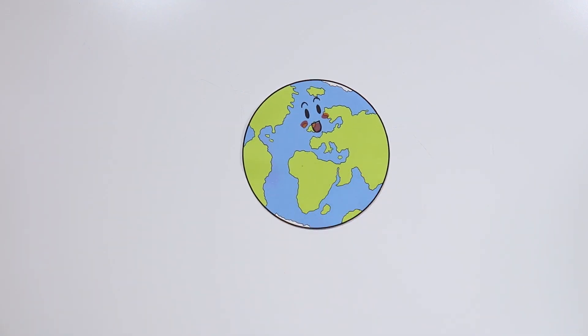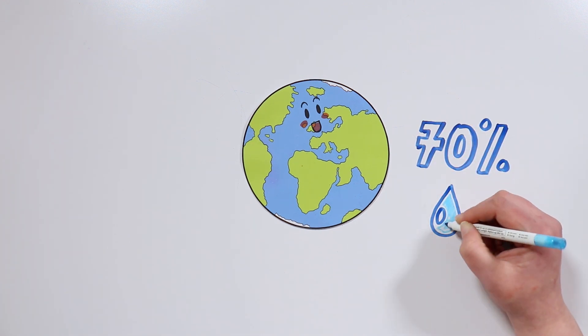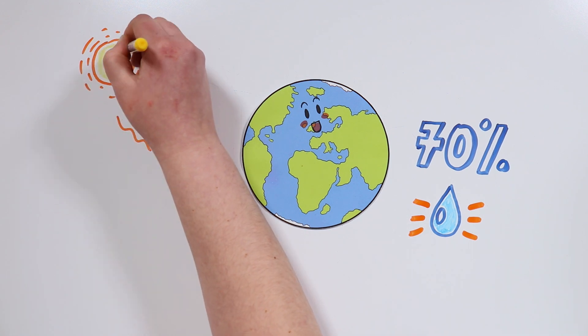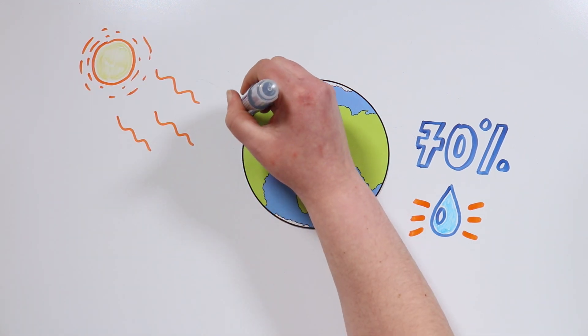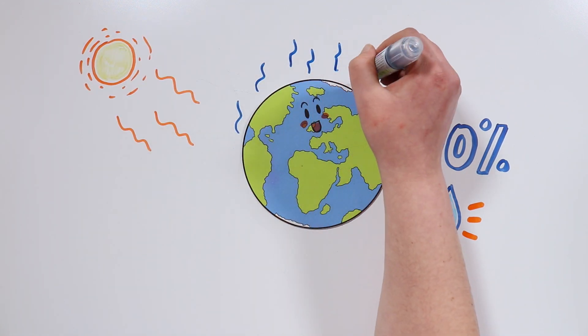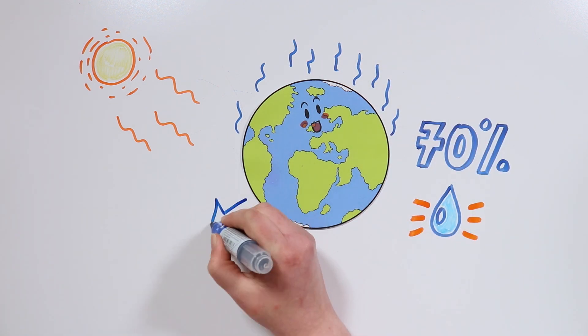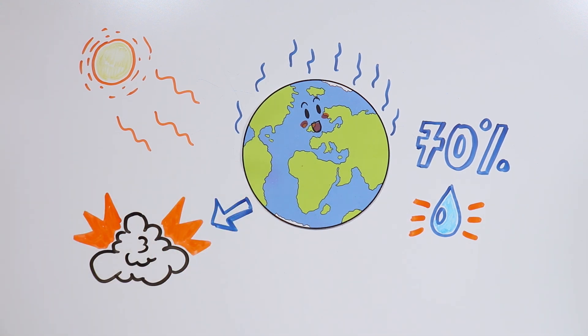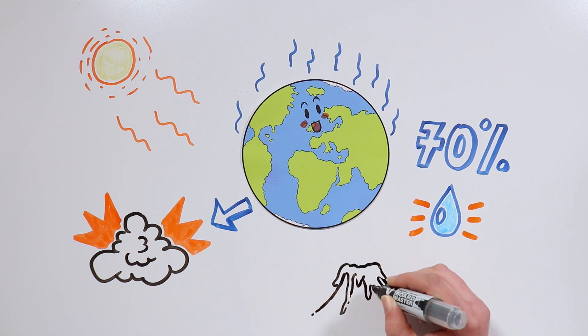Earth's surface is covered by 70% water, and when the sun heats up the surface, part of that water evaporates. That steam ascends to the atmosphere, and little by little it cools down and condenses. That is, it transforms into liquid again. And there we have them! That's how clouds are formed, tiktakers!